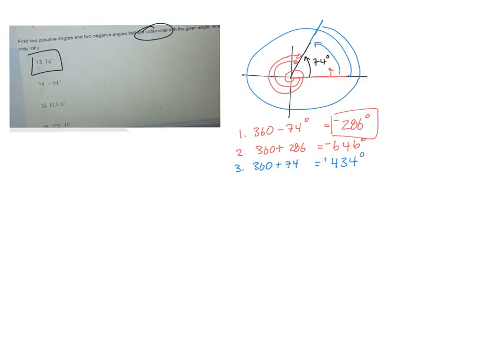And that's a positive angle because I was going around counterclockwise. And then another one, you just go around another time. So here's my 74. So I'm going to go around once, that's 360. Around again, that's 720, plus another 74. So 720 plus 74, what does that come out to? 794. So there's two negative ones and two positive ones.